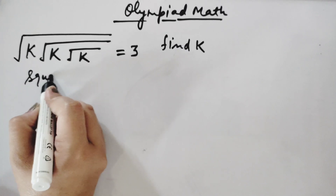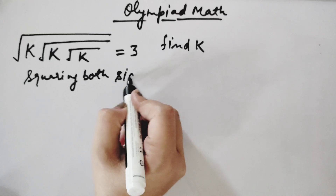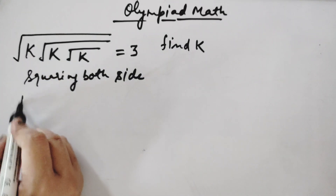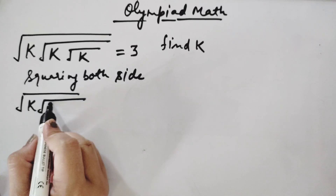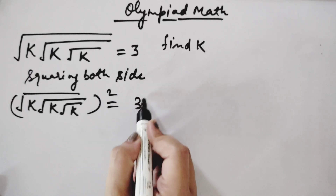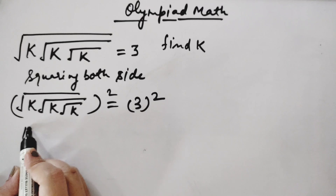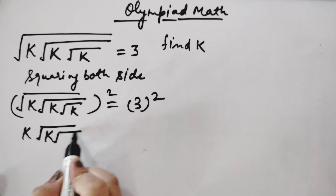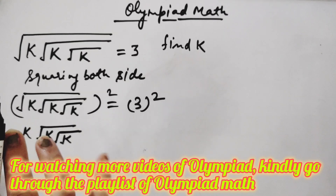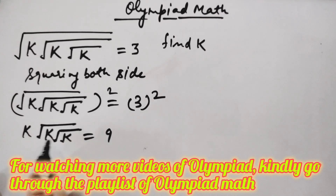Squaring both sides — the left hand side and right hand side. This outermost square root is cancelled out by squaring. So k is remaining inside, and there are still 2 square roots remaining. The first k is removed from the square root, and on the right hand side 3 squared equals 9. We still have 2 square roots remaining.